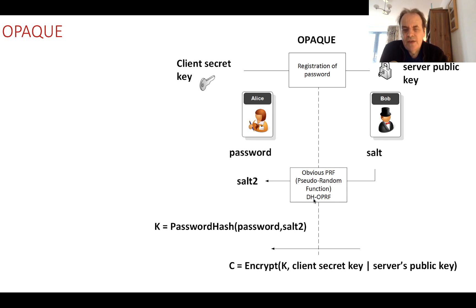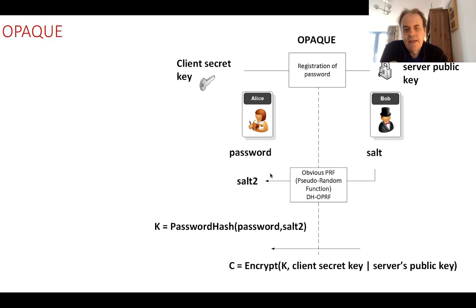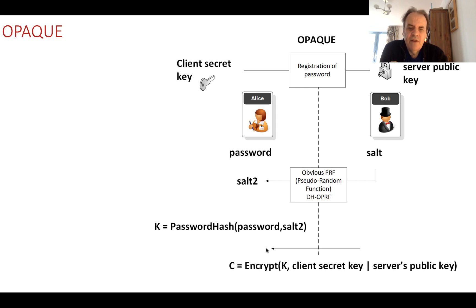What we have is what's called an oblivious pseudo-random function, and it is also integrated into the Diffie-Hellman method. With this, Bob can pass the value of the salt to Alice without Alice ever finding out what the salt value is, but she can then use it to derive a key. If we call the result 'salt2', it is possible to calculate a key based on this new salt value and the password that Alice knows. She then knows this is the right key because Bob, using her secret key and his public key, passes a ciphered value of the key which she can decrypt and verify.